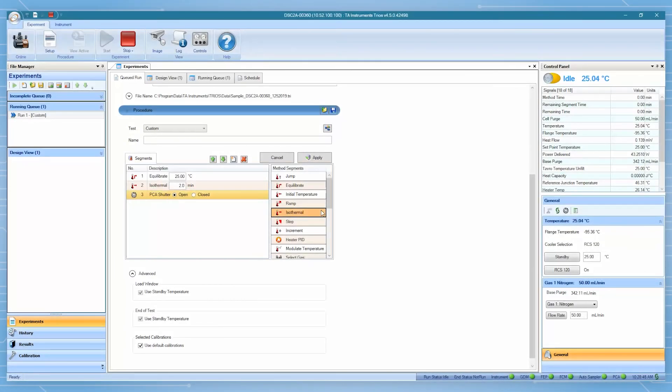Shutter open. Keep isothermal for desired exposure time. And then close the shutter.